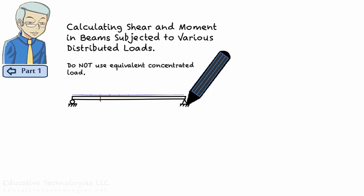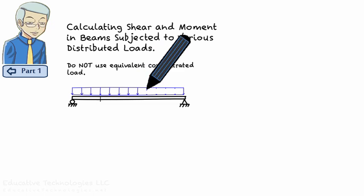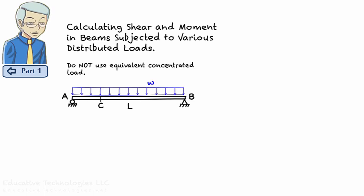Consider a simply supported beam subjected to a uniformly distributed load of W. Let's obtain shear and moment in the beam when it's subjected to the distributed load, and when it's subjected to the equivalent concentrated load.